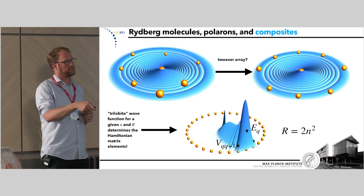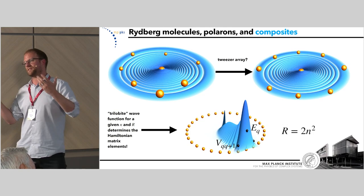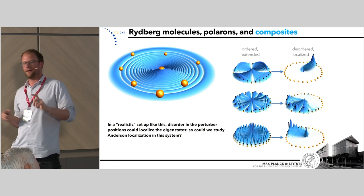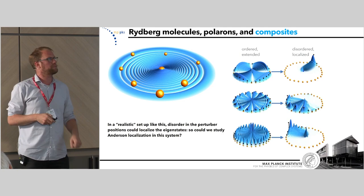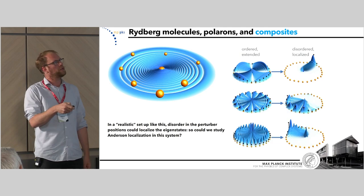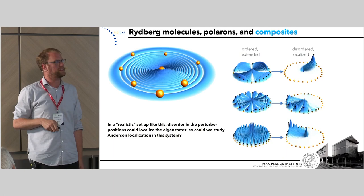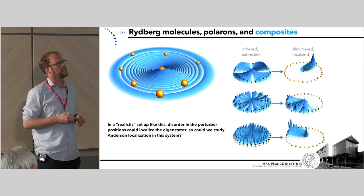Using the magic of tweezer arrays, you can simply surround your Rydberg atom with a ring of ground state atoms. For a big enough ring, we essentially get nearest-neighbor hopping since the trilobite only overlaps its neighbors, giving a really nice tight-binding Hamiltonian to study. Of course in a potential experimental realization — though it would be very difficult — you couldn't position atoms perfectly, so instead of extended eigenstates you'd get localized ones due to positional disorder, immediately bringing up the idea of Anderson localization.